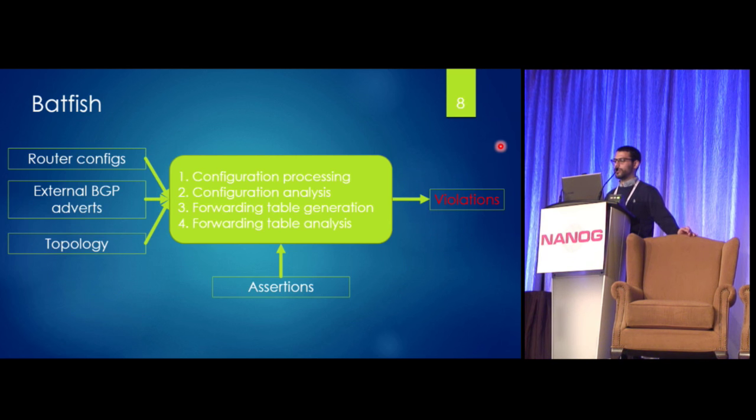So the way Batfish works is that you input your router configuration files and maybe some information about external BGP advertisements that you want to model, as well as your topology. And you also provide some assertions that you want to check, and then outcome violations. Batfish is divided into these four stages that you see here. First, we just process the configurations. Then you analyze them with assertions based just on the configurations. And then we are actually able to use all this information to generate the forwarding tables that would occur if you were actually to run this network. And then furthermore, you can write assertions about the forwarding tables that you'd like to check.